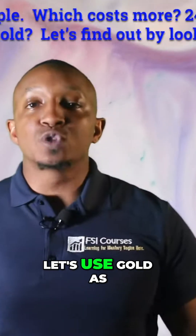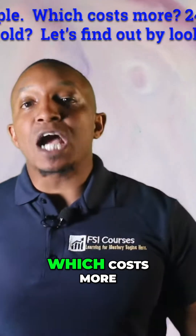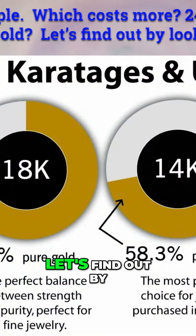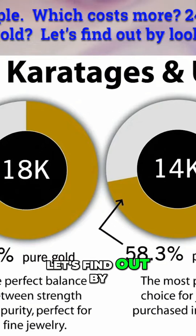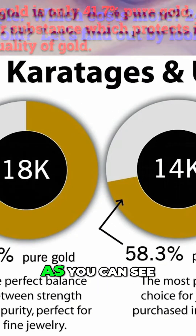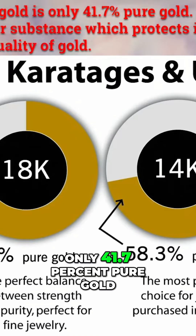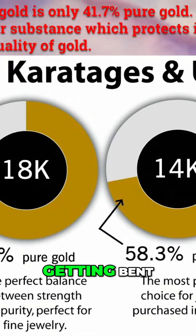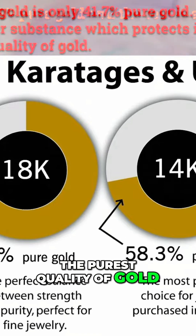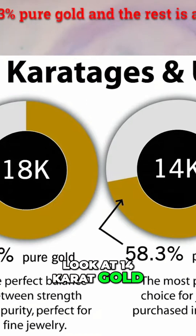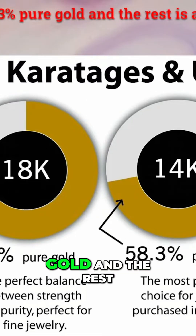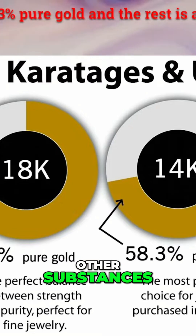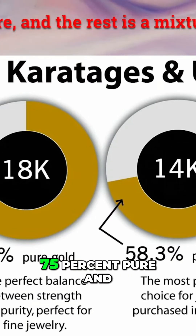Let's use gold as an example. Which costs more: 24 karat gold, 18 karat gold, 14 karat gold, or 10 karat gold? Let's find out by looking at the following chart. As you can see, 10 karat gold is only 41.7% pure gold, because it is a mixture of gold and other substances, which protects it from getting bent but it's also not the purest quality. 14 karat gold is 58.3% pure gold, and the rest is a mixture of other substances.